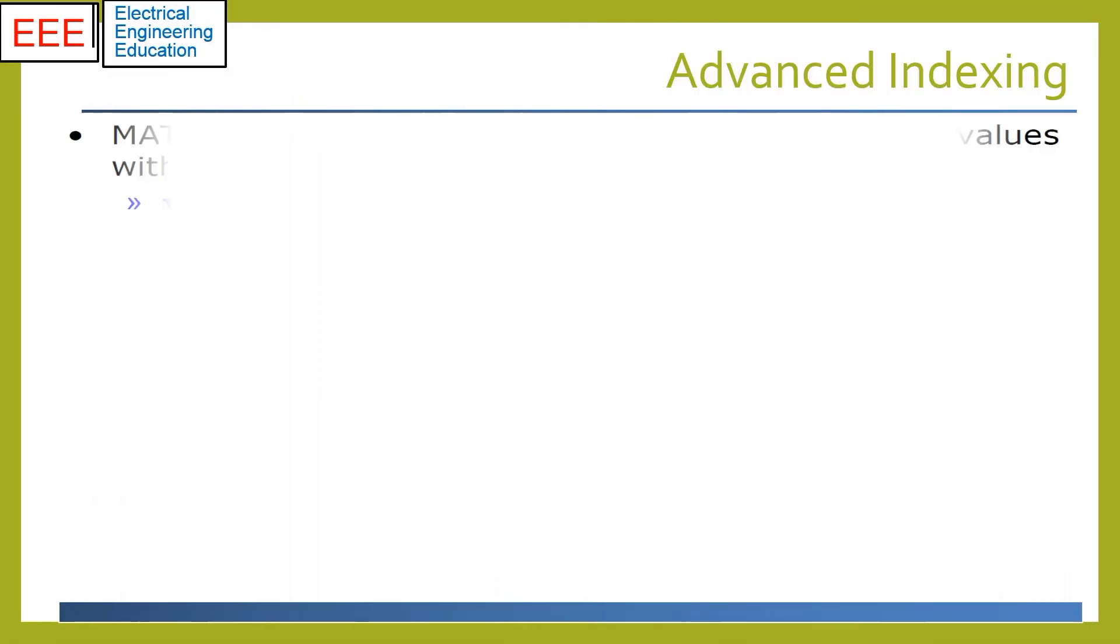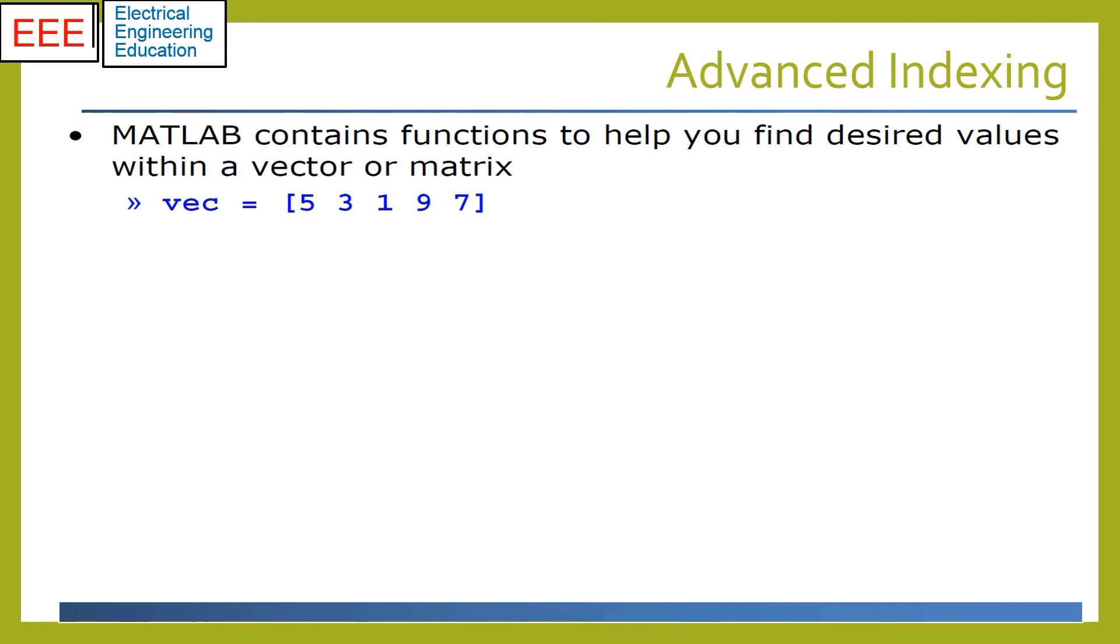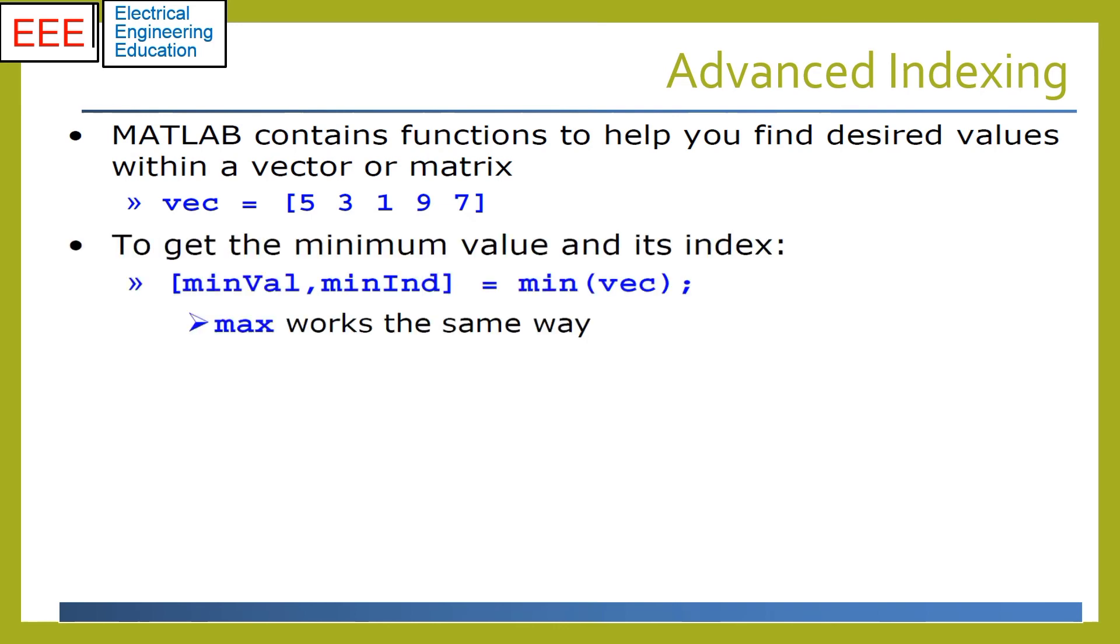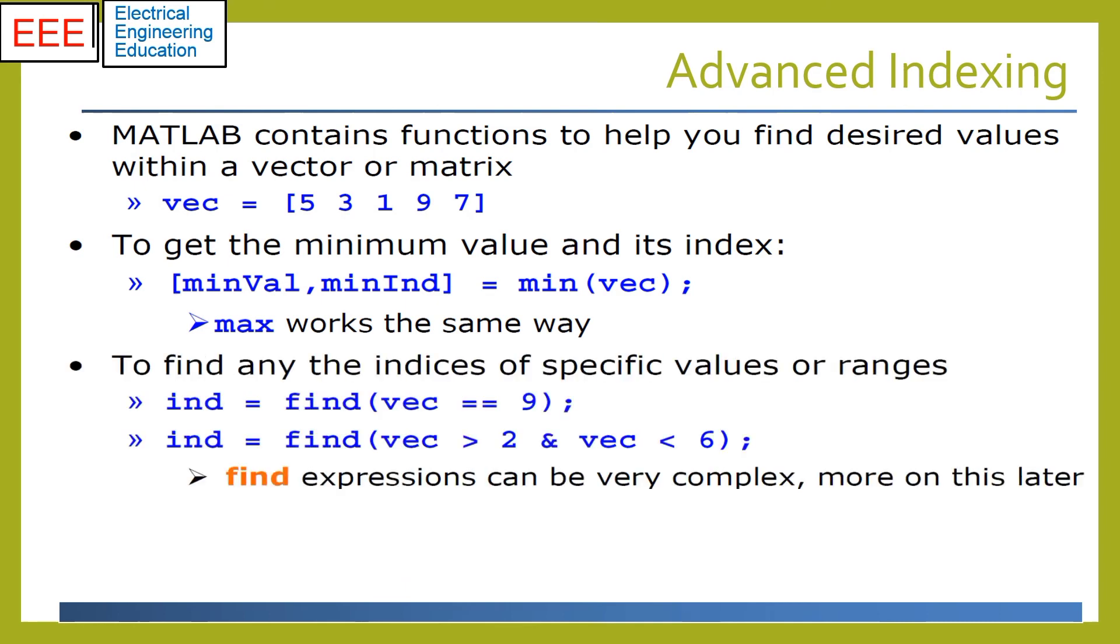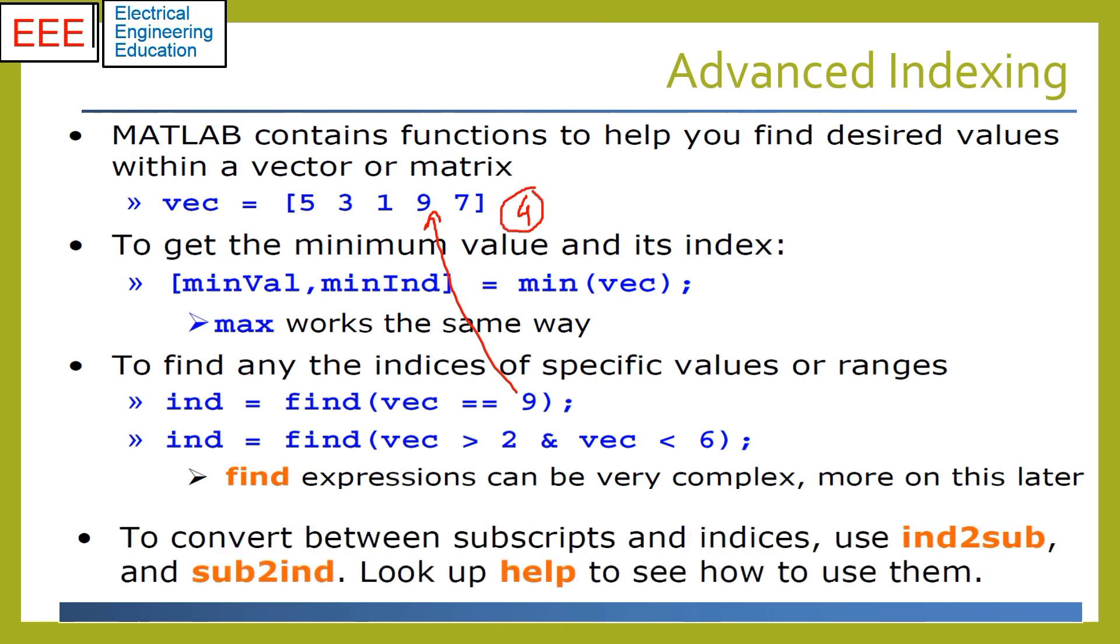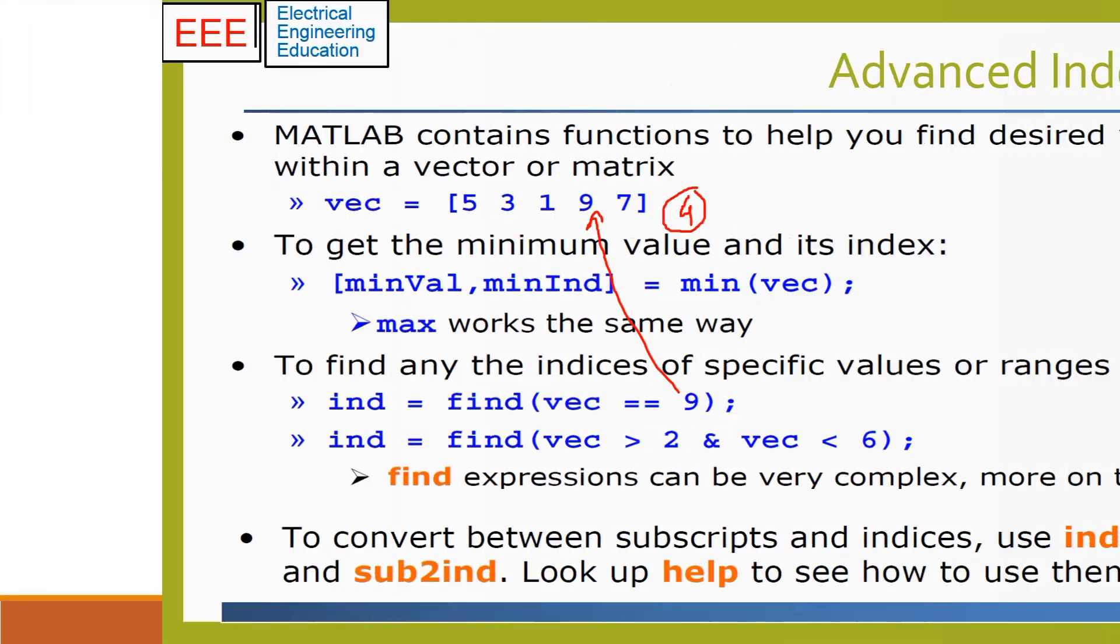MATLAB provides a list of functions which return indices as well as corresponding values. The min and max functions return the corresponding values along with the index. To find the indices of specific values or desired ranges, the find function will return the array of indices. The ind2sub and sub2ind are utility functions for conversion between subscripts and indices.